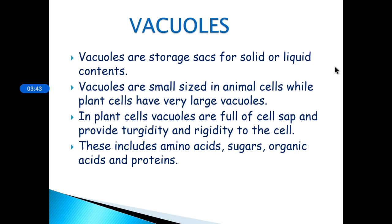Here you can see the picture of plastids. The next and last cell organelle is vacuoles, which you have already studied. Vacuoles are storage sacs for solid and liquid contents. They are small in animal cells but occupy a larger space in plant cells. In plant cells, vacuoles are full of cell sap, which provides turgidity and rigidity to the cell, and contains amino acids, sugars, organic acids, proteins, etc.